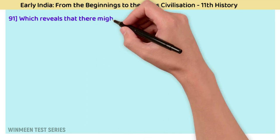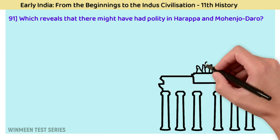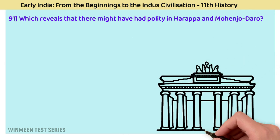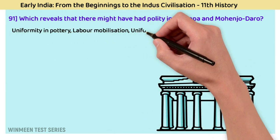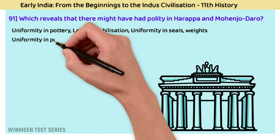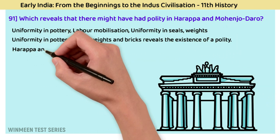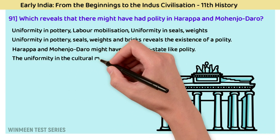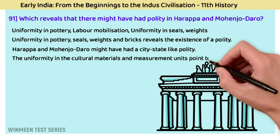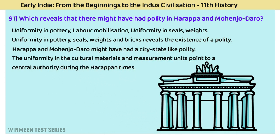Question 91: What reveals that there might have been a polity in Harappan Mohenjo-daro? The answer is uniformity in pottery, labour mobilization, uniformity in seals, and weights. The uniformity in pottery, seals, weights, and bricks reveals the existence of a polity. Harappan Mohenjo-daro might have had a city-state like polity. Uniformity in cultural materials and measurement units points to a central authority during Harappan times.